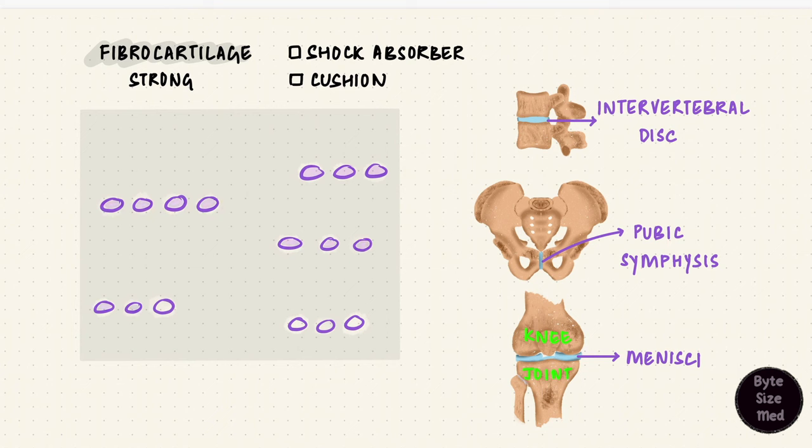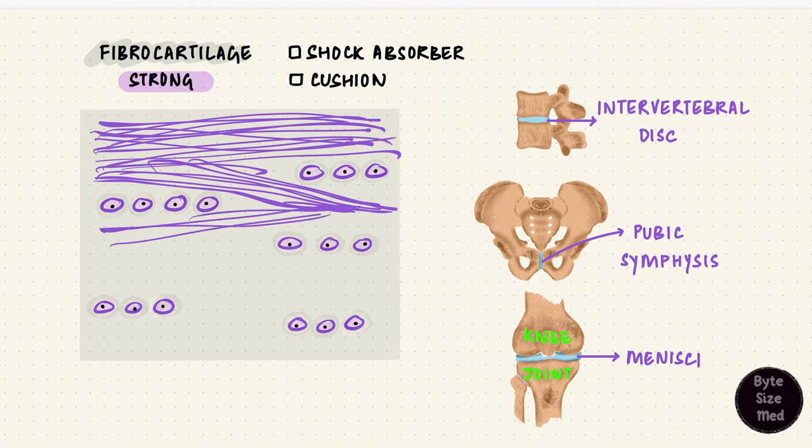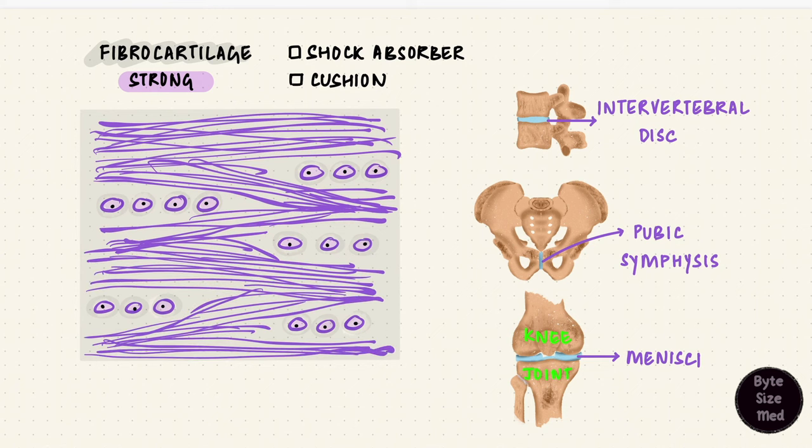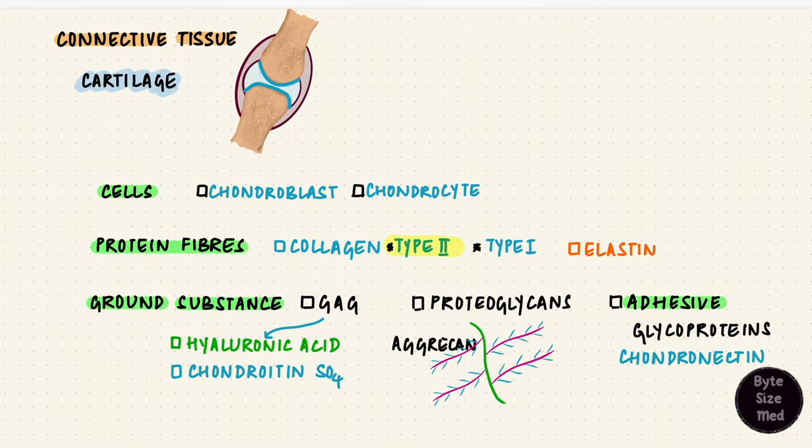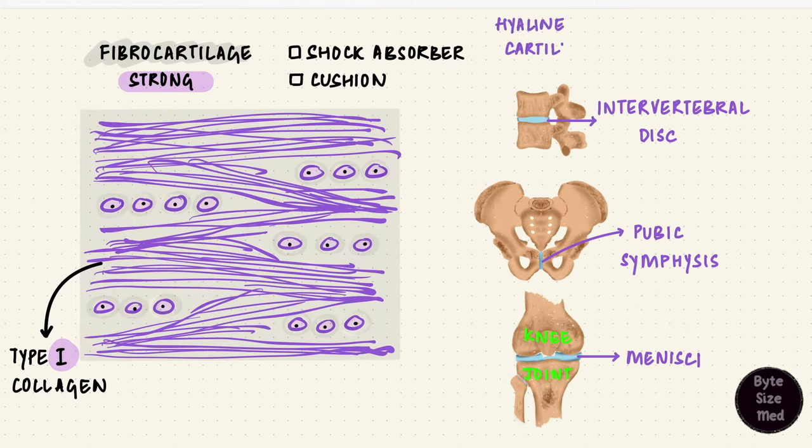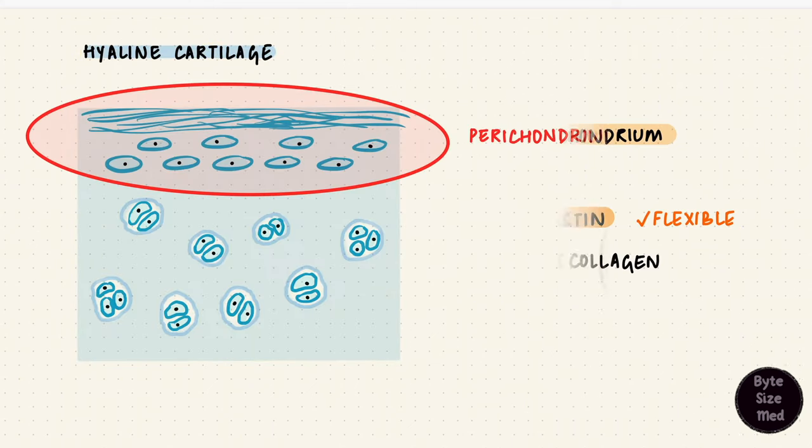It's got those chondrocytes in lacunae, but remember that fibrocartilage is very strong. And where does it get its strength from? Collagen fibers. So these cells are separated by bundles of collagen fibers, predominantly type 1 collagen. So most cartilage has type 2 collagen, but fibrocartilage has predominantly type 1 collagen. It's like a combination of hyaline cartilage and dense connective tissue. And it does not have a well-defined perichondrium. This is when compared to elastic cartilage which has a perichondrium, as does hyaline cartilage, except for the articular cartilage. Again, articular cartilage does not have a perichondrium.